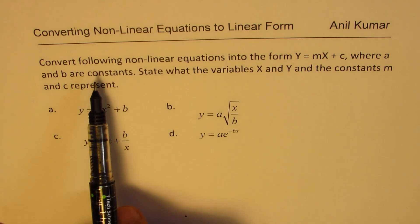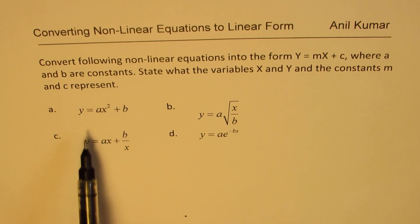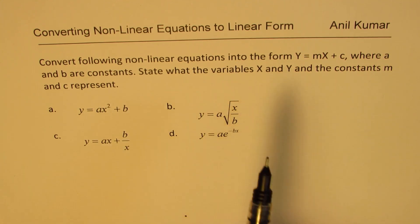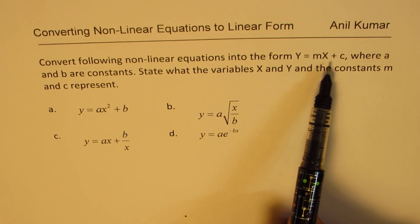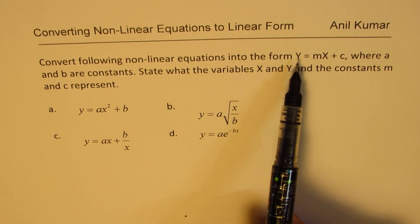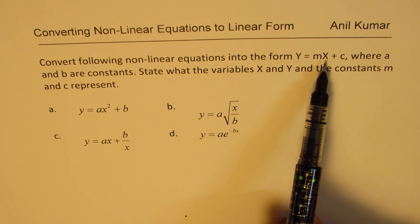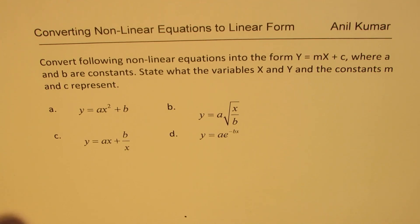The question is to convert the following nonlinear equations into the form Y equals to mX plus c, where a and b are constants. State what the variables capital X and capital Y and the constants m and c represent. When you convert them to the linear form capital Y equals to m capital X plus c, you need to explain what capital Y the dependent variable and capital X the independent variable are.